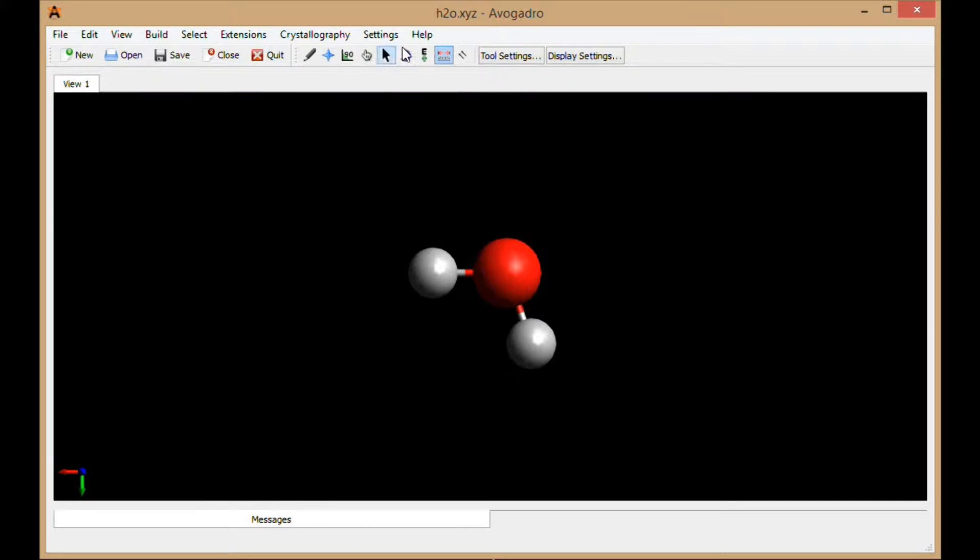So I got that in Avogadro here, and if I use the measurement tool I can click 1, 2, 3, and at the bottom I see that my bond distances are 0.97 angstroms and my bond angle is 109.5 degrees.